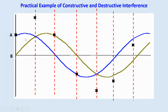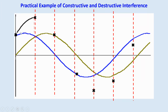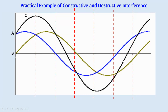The next step is to connect all the marked points on the diagram, following the same curve shape as the original waves. Connecting all of them produces the resultant wave — the sum of A and B — which we call wave C. Wave C has this combined shape.